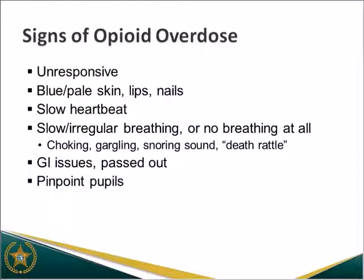The signs and symptoms of opioid overdose: the main thing is that somebody is going to be unresponsive — they won't respond to shouting their name or any kind of stimuli. Their skin, lips, or nails could be blue or pale due to lack of oxygen. Their heartbeat could be really slow, their breathing can be really slow, irregular, or they may not be breathing at all. They could sound like they're snoring, which is actually called a death rattle, meaning they're not getting much oxygen. They could have pinpoint pupils and gastrointestinal issues like vomiting. All of these signs would indicate an opiate overdose; the main thing is they will be unresponsive.